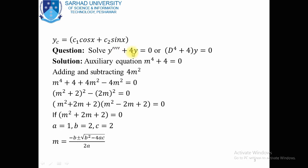Another example: a fourth order linear homogeneous differential equation y'''' + 4y = 0. This can be written as (D⁴ + 4)y = 0. So y = 0 is again the trivial solution. For the non-trivial solution, we have auxiliary equation m⁴ + 4 = 0. To find the roots m for this auxiliary equation, we add and subtract 4m².